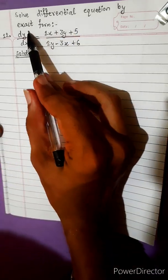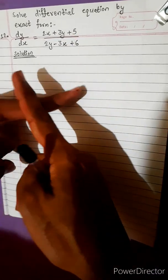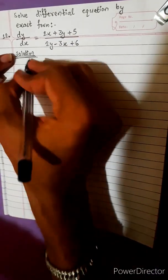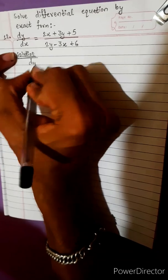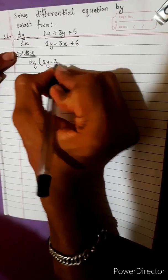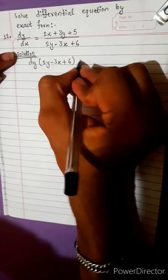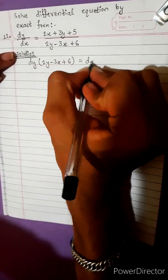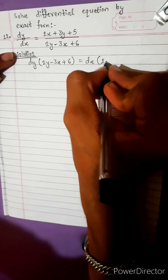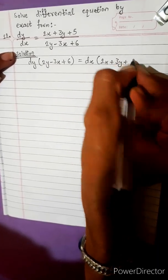Solve the differential equation by exact form. Cross multiply. The equation is: dy(2y minus 3x plus 6) equals dx(2x plus 3y plus 5).